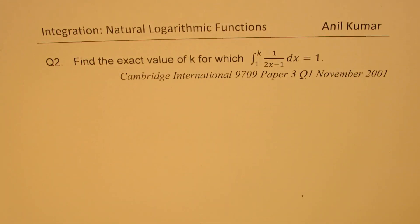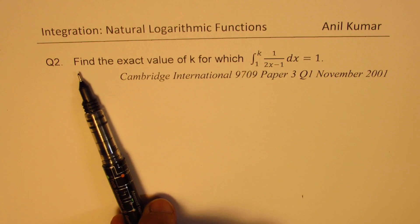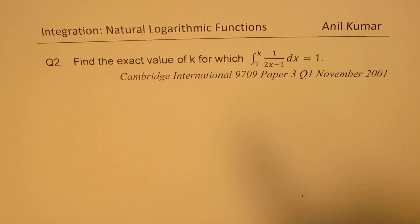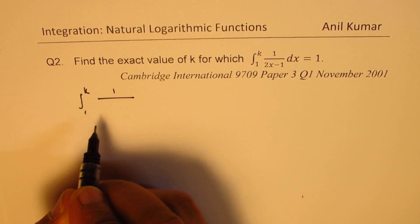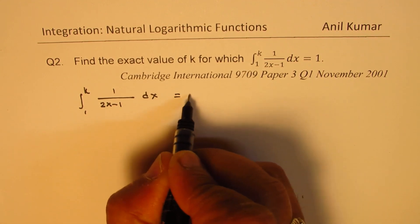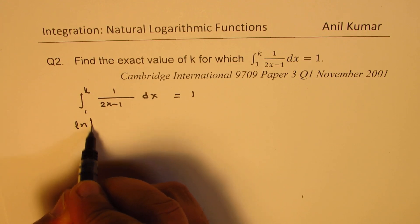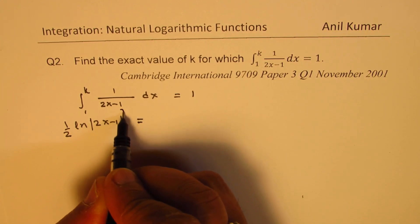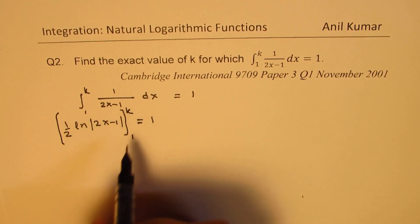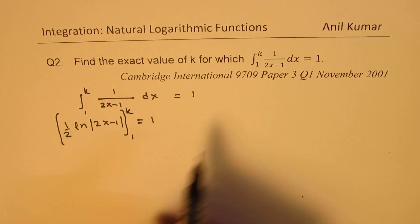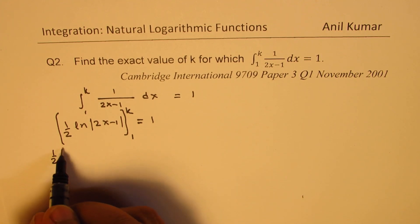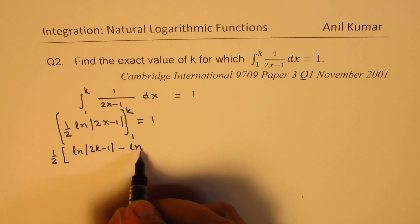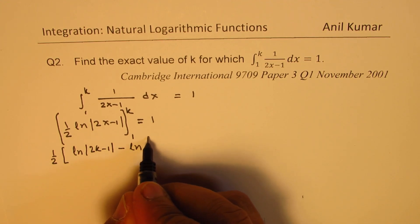Now let's take up question 2: find the exact value of k for which the definite integral from 1 to k of 1 over (2x minus 1) dx equals 1. Integrating gives (1/2) ln of the absolute value of (2x minus 1), evaluated from 1 to k, equals 1. Substituting: one-half times [ln(2k minus 1) minus ln 1] equals 1. Since ln 1 is 0, we have (1/2) ln(2k minus 1) equals 1.